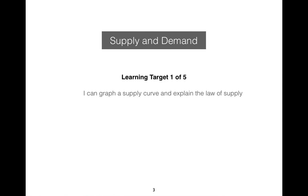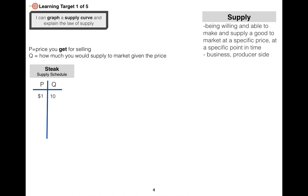Learning target one: I can graph a supply curve and explain the law of supply. Here, you want to put yourself in the business or producer position — what determines how much of a good is available for sale? That's what supply is: being willing and able to make and supply a good to the market at a specific price at a specific point in time.